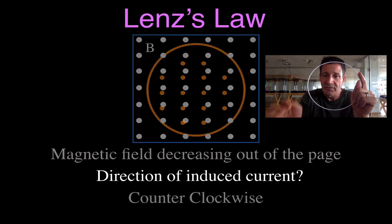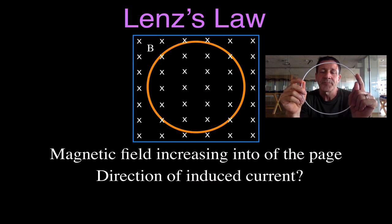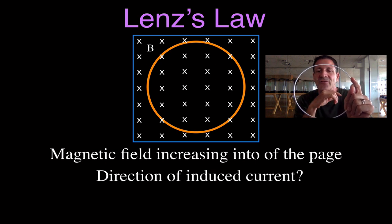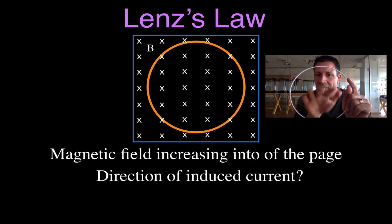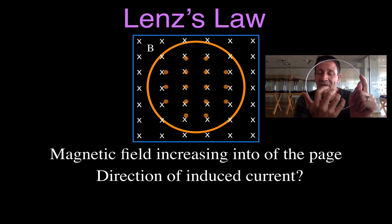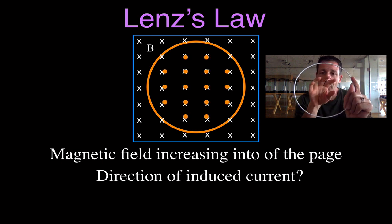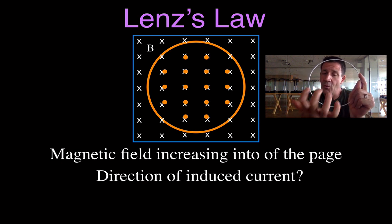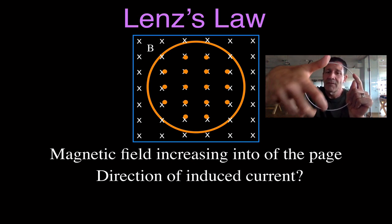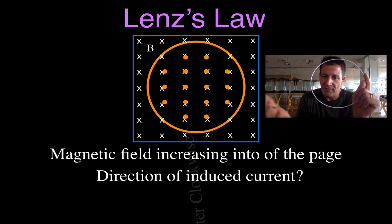Now the next two cases have the magnetic field going into the page. In this case, there's magnetic field going into the page and it's increasing into the page. The coil doesn't like that — there's more in, in, in. Therefore, the coil is going to produce magnetic field that comes out of the page to negate it. If there's more pointing in, the way to oppose that is to make some coming out of the page. So this coil will make a current in the counterclockwise direction, because counterclockwise current produces magnetic field coming out of the page.